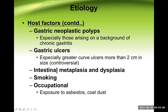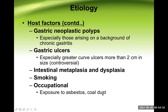Intestinal metaplasia means the gastric epithelium is changing into intestinal-looking epithelium — the gastric epithelium is not occurring in the intestine, but rather the gastric epithelium is becoming tall columnar type, similar to intestinal cells. Metaplasia and dysplasia carry high risk. Smoking and occupational exposure to asbestos and coal dust can also predispose to gastric malignancy.